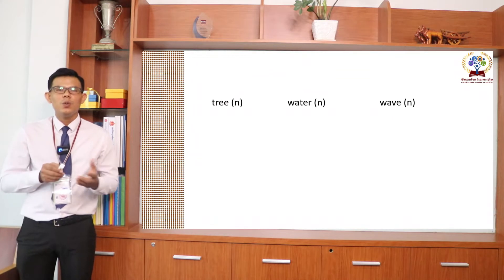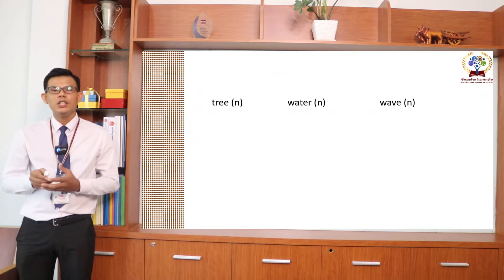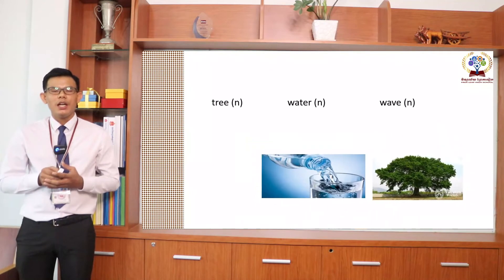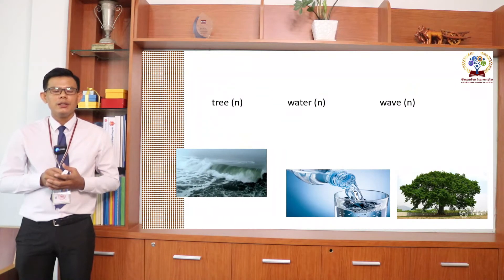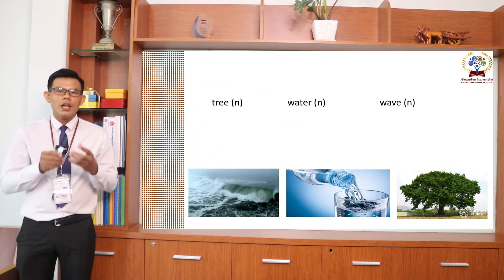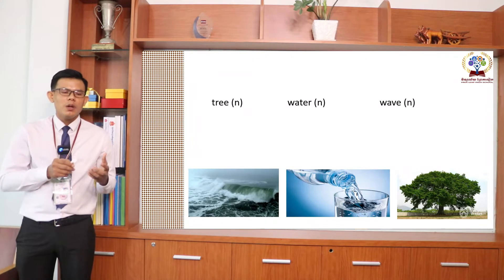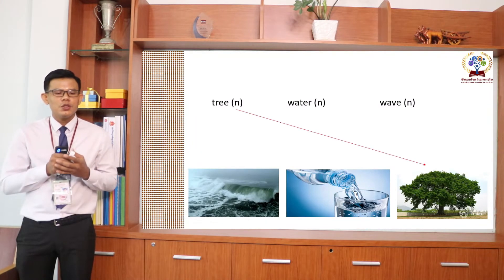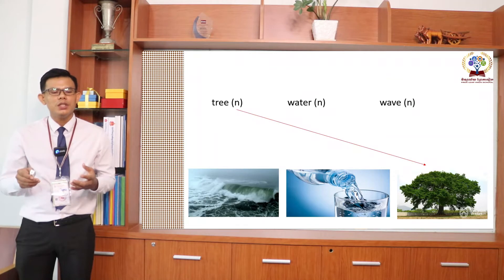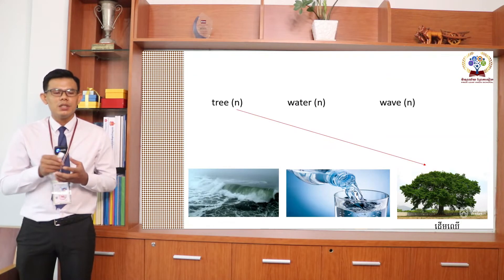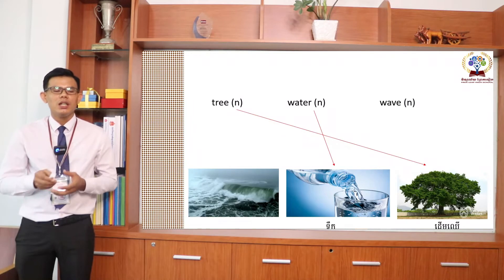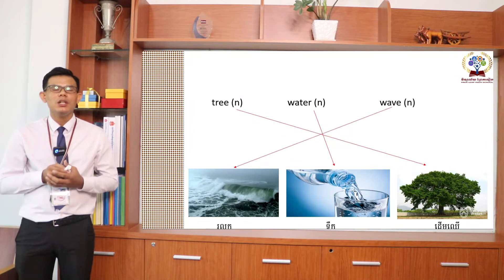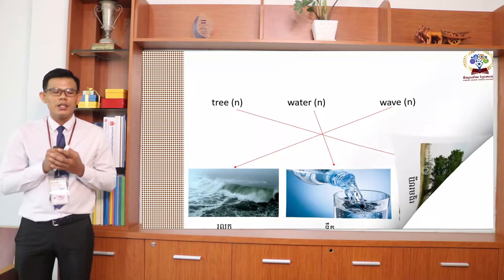Next we have tree, water, and whale. Look at the pictures and match them. Tree — in Khmer we say 'Da Um Chhe.' Water — you see a glass of water. And whale — in Khmer we say 'Rollo.'